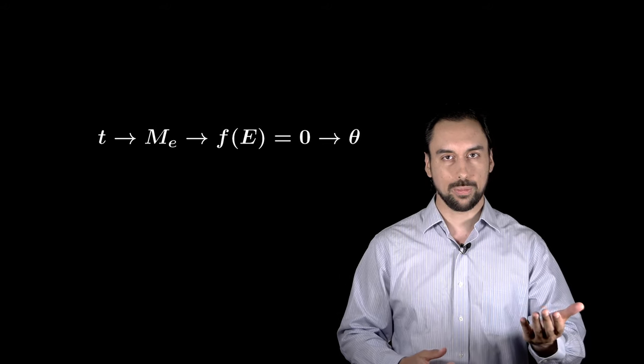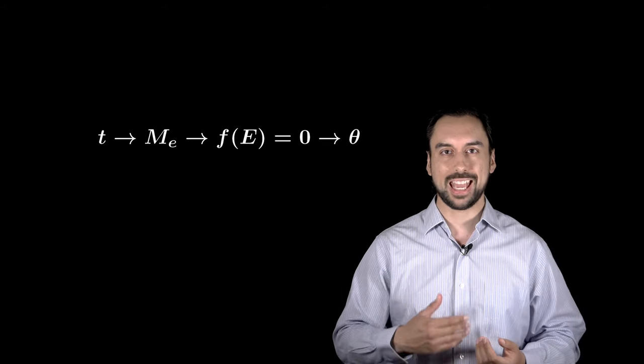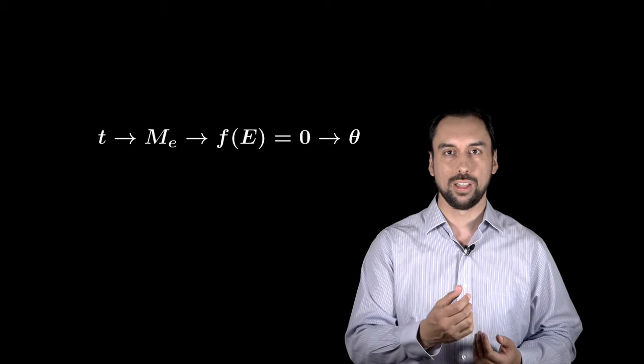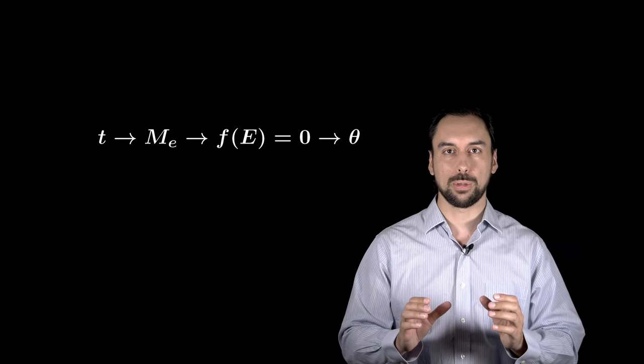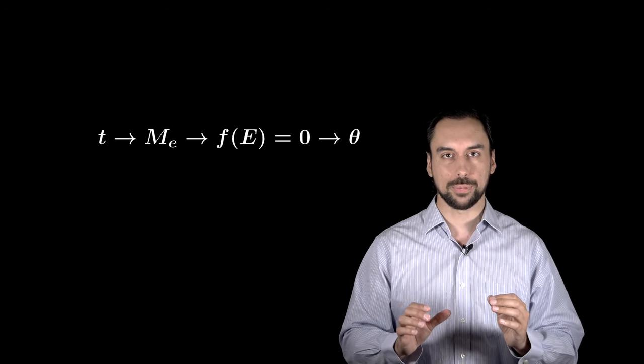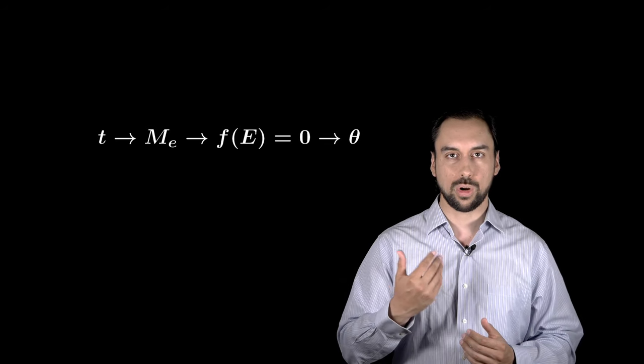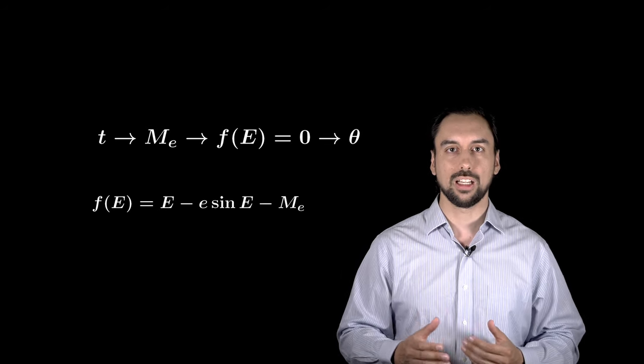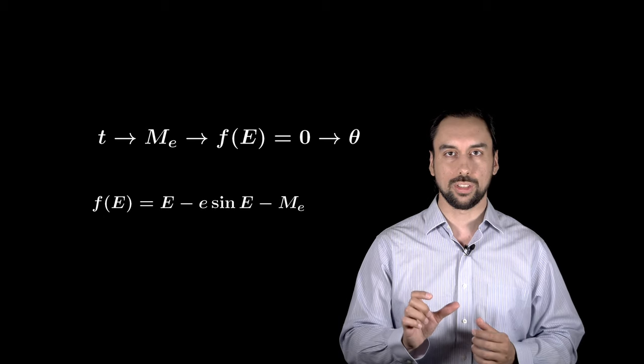In the second problem, if you know the time after passing the periapsis, you can calculate the mean anomaly. But you cannot use Kepler's equation directly to obtain the eccentric anomaly. You will have to rewrite it in this way, and then obtain the roots of this function.